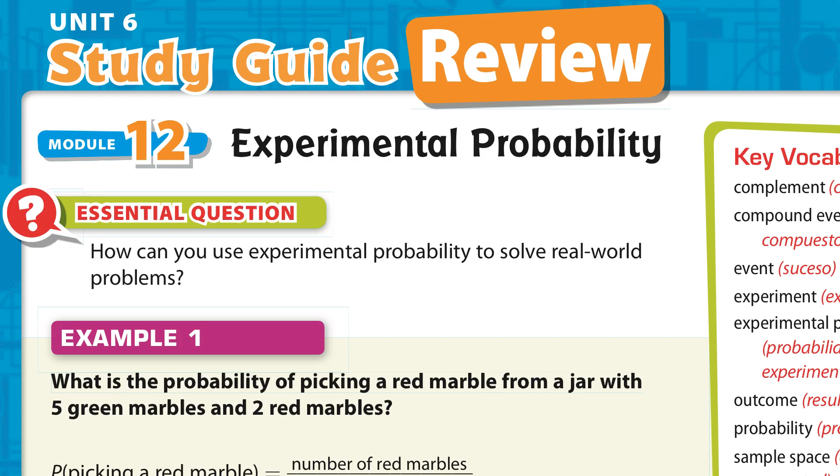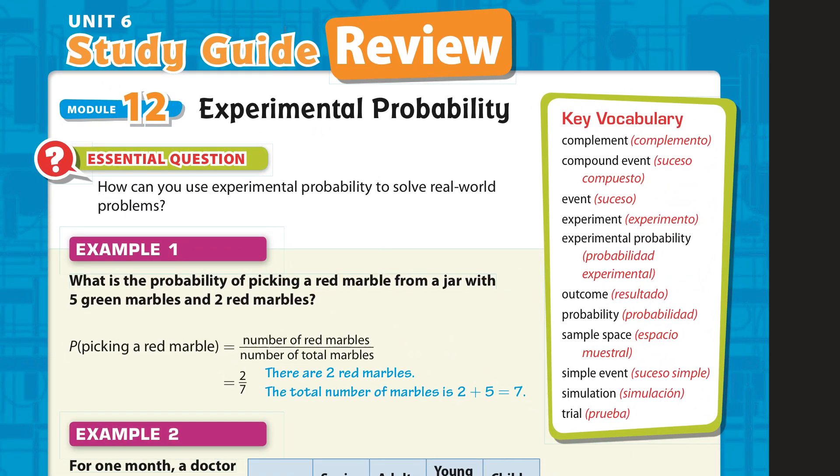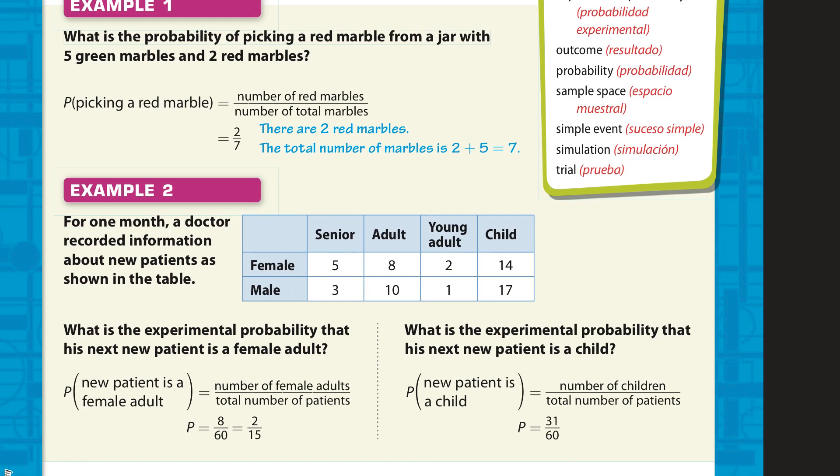Hi, and welcome to the Unit 6 Study Guide. We're talking about experimental probability - in general, this whole unit's about probability. And I'm going to start with just running through this real quick, and we have to make sure that we can use probability to solve real-world problems. In this, we're going to be exploring key vocabulary here, and through this example.